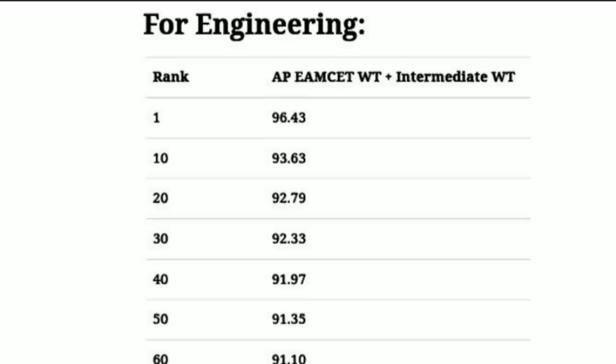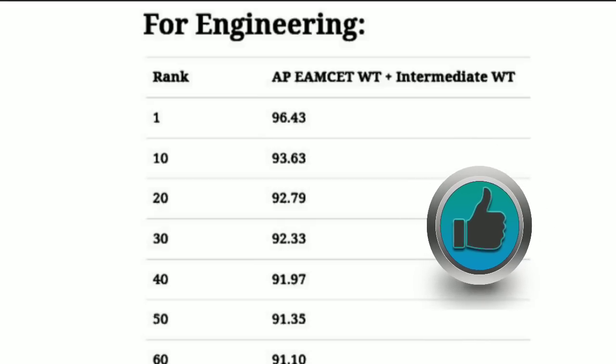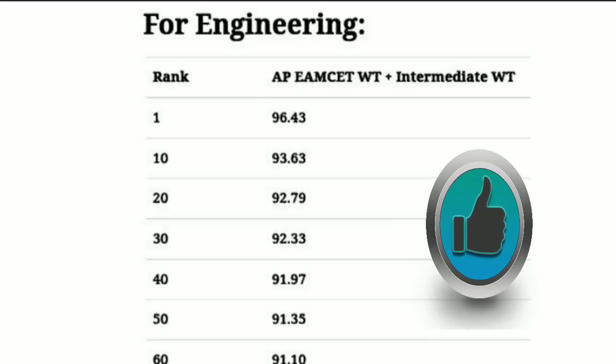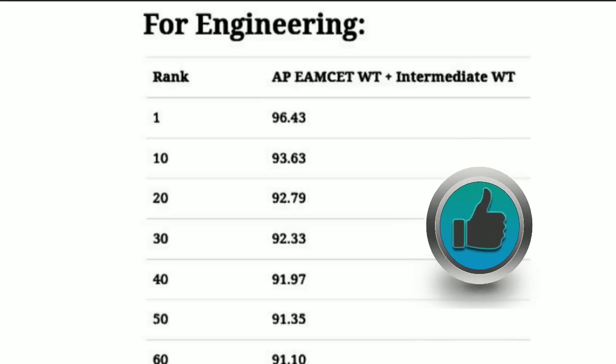Now let us go through this sheet. For securing first rank, your total weightage should be 96.43 — MSET weightage plus intermediate weightage. Similarly, for getting 40th rank, you should get 91.97. The list goes like this.